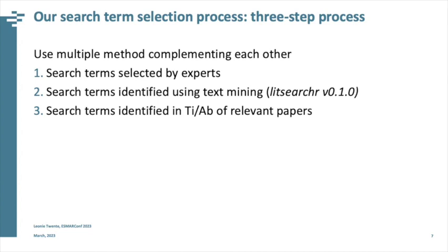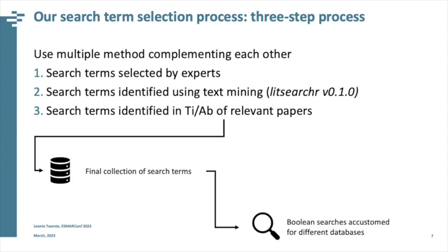We used a multi-step procedure with LitSearchR as a complement to other search term selection steps. We started by collaborating with experts to define initial search terms, used those for naive searches in a set of databases, then used those articles as input to the LitSearchR workflow, resulting in output complementing step one terms. In step three, we used other relevant papers to extract further keywords, resulting in a final database of search terms combined into search strategies customized for each database.